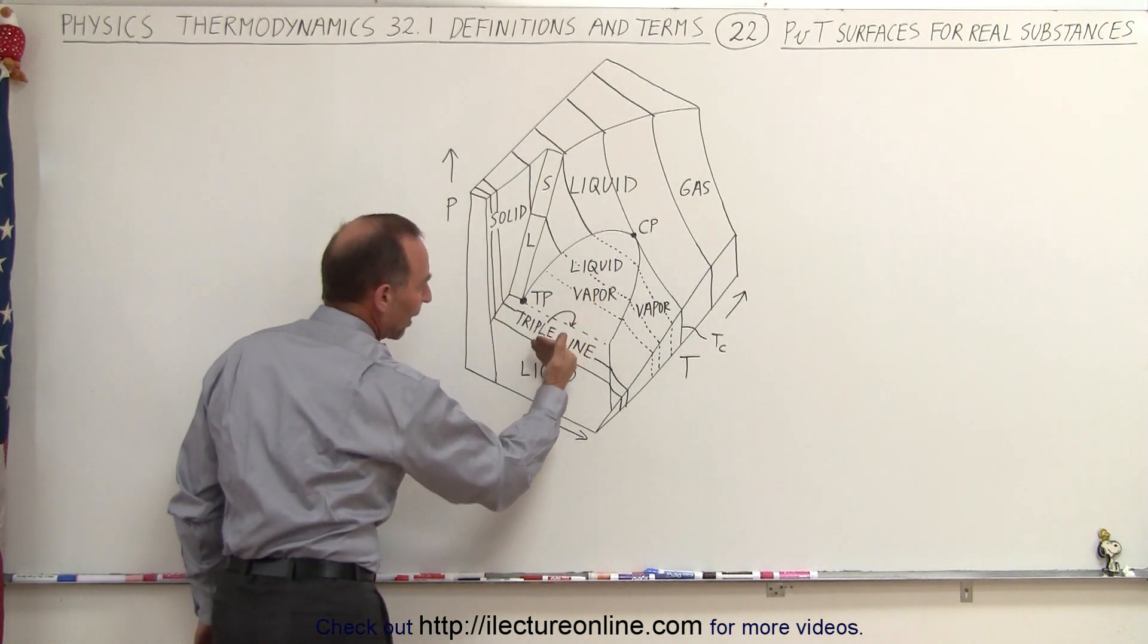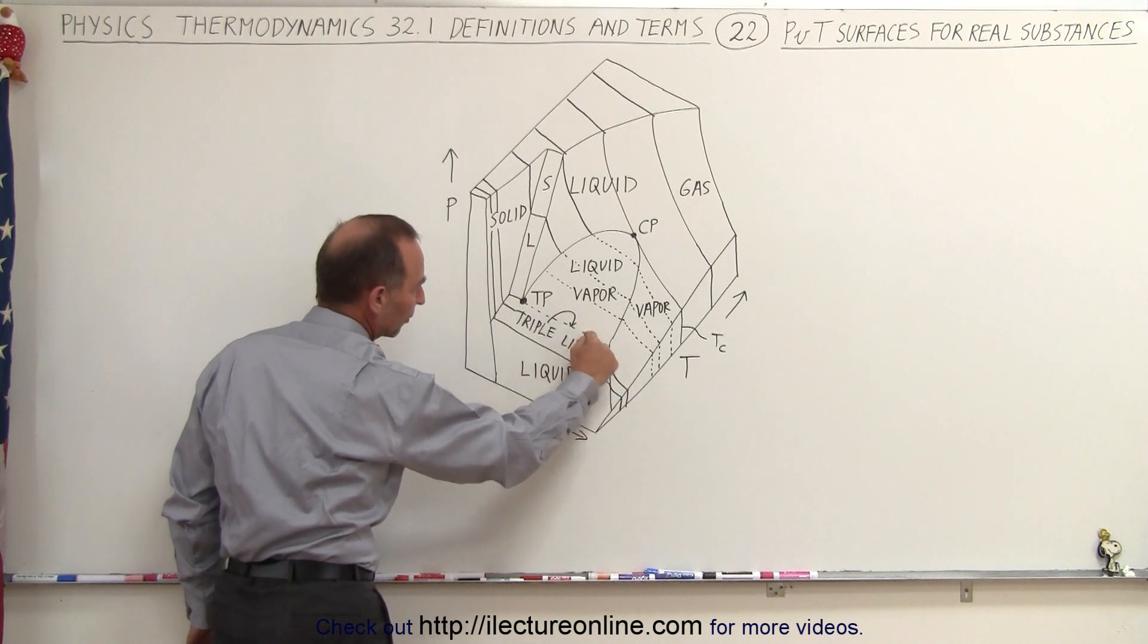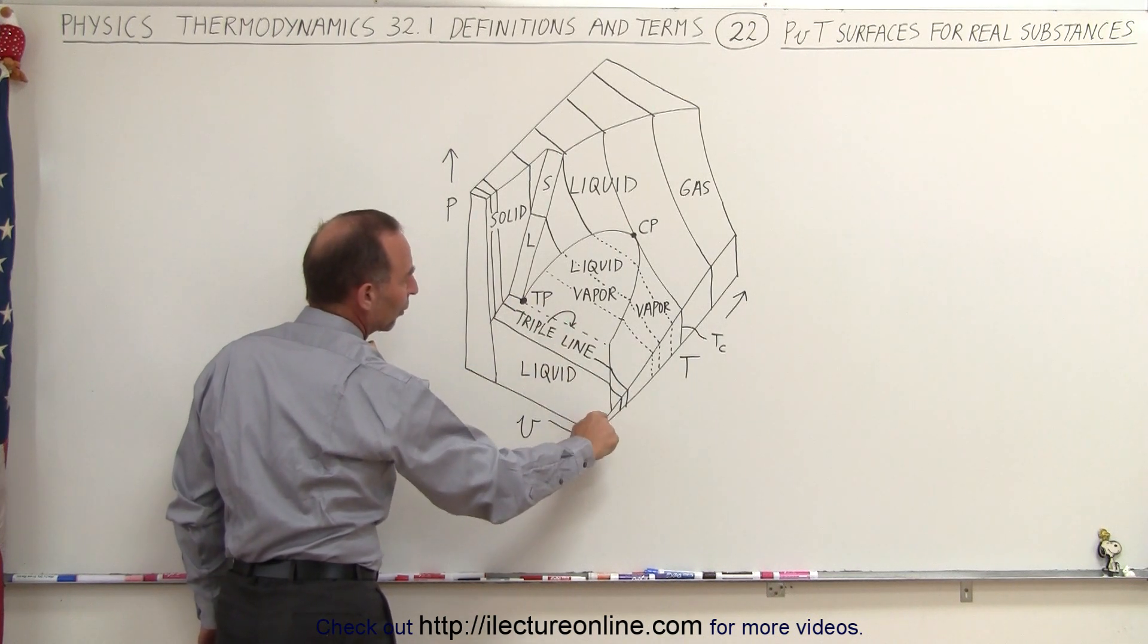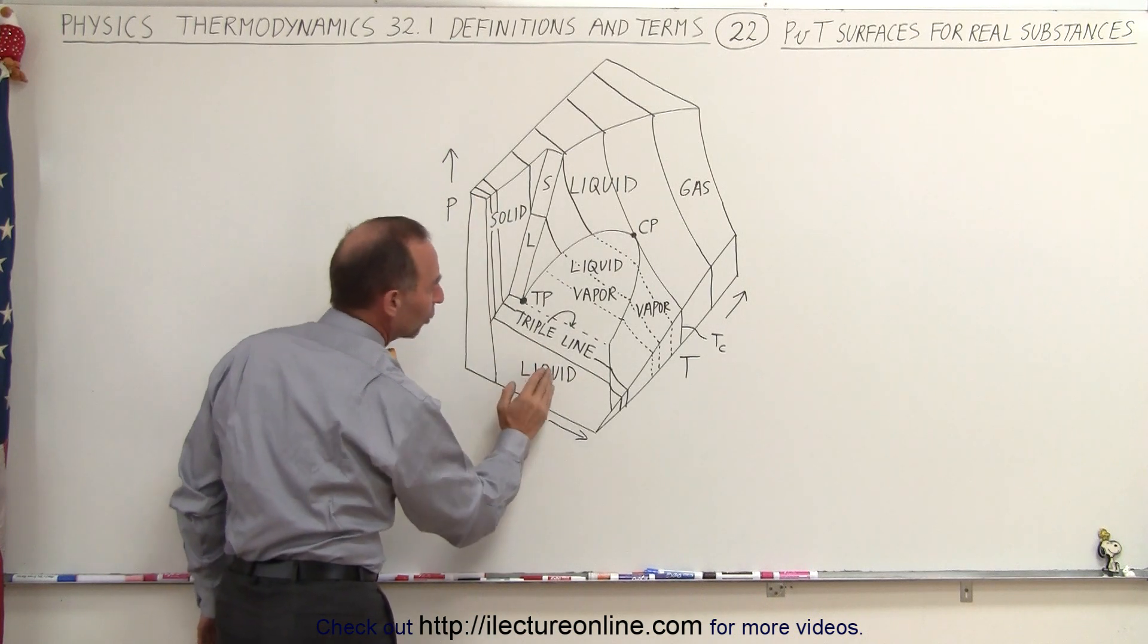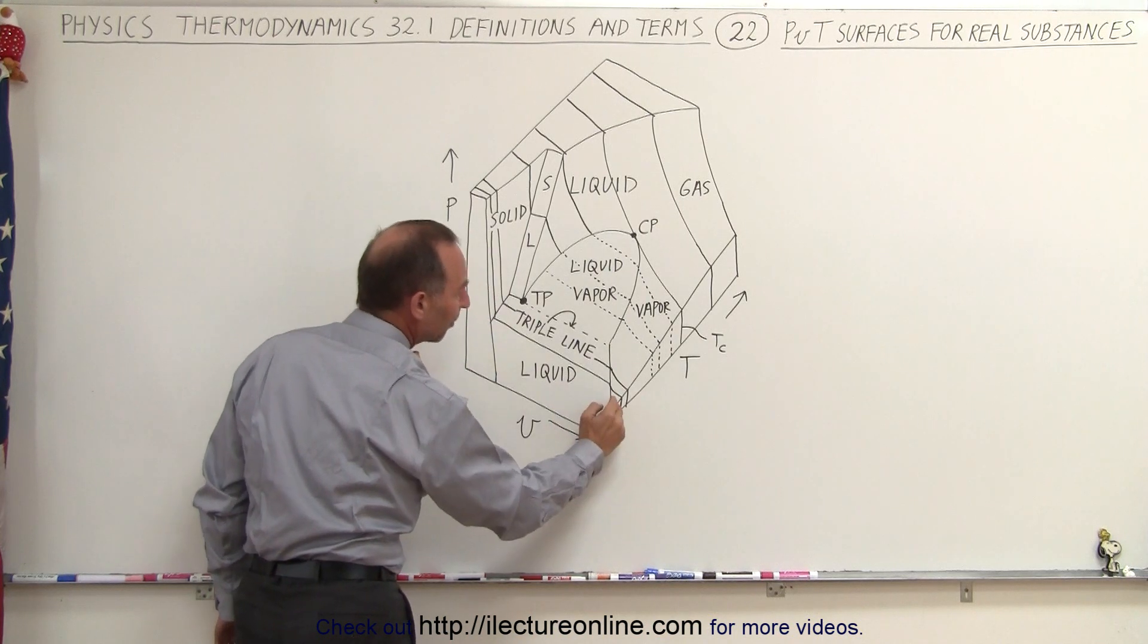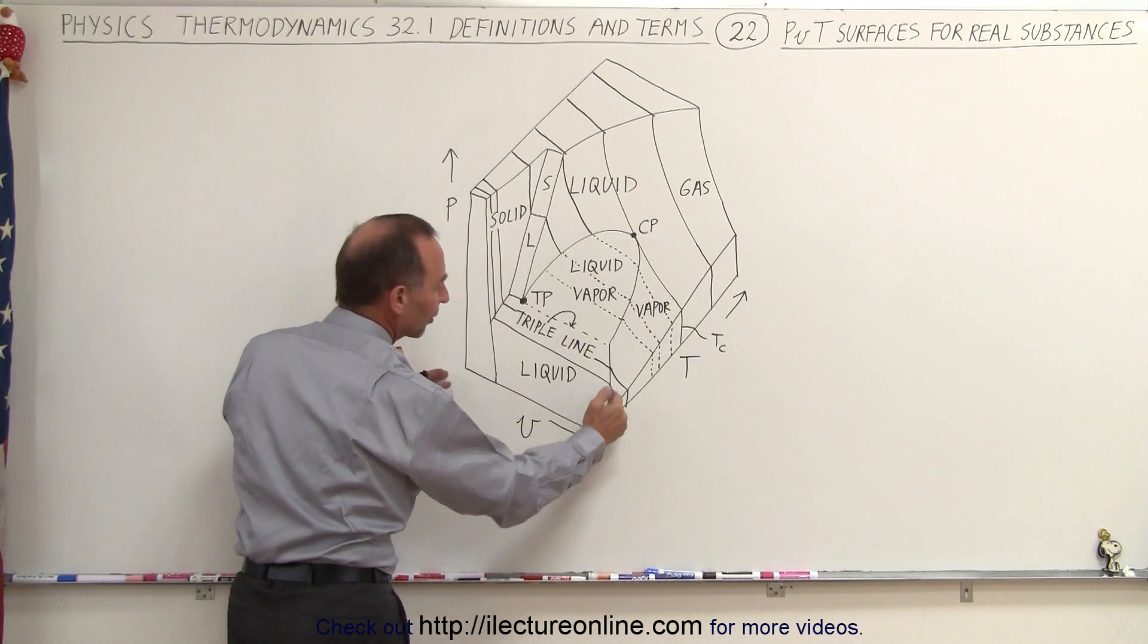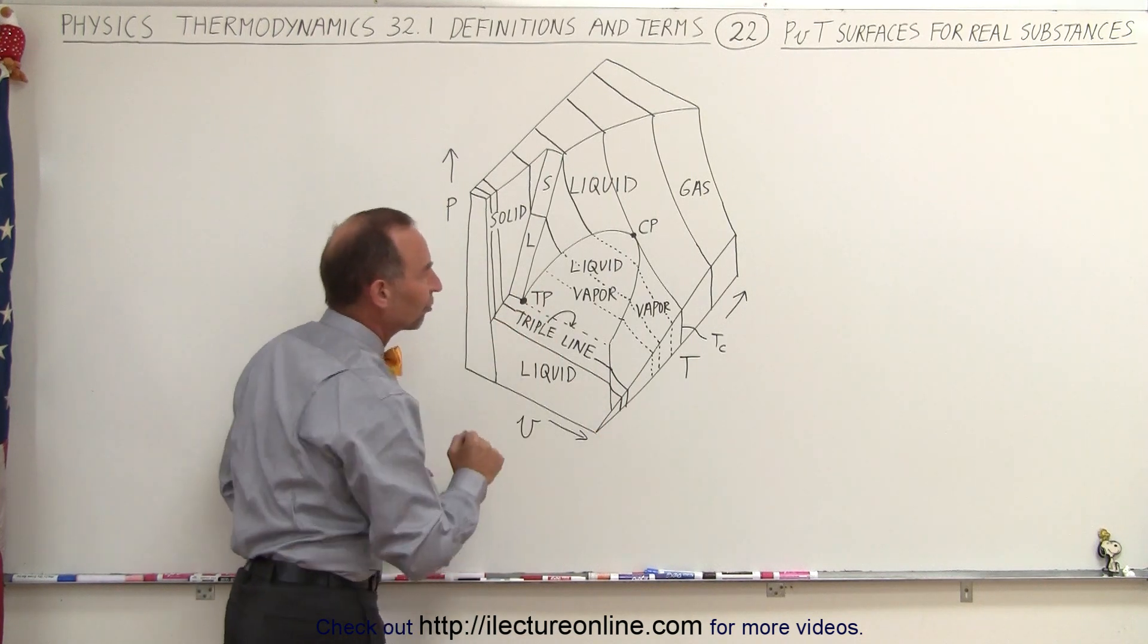Finally, when you come down to the bottom here, below the triple line—notice this is the triple line that goes to the triple point—we go from a liquid into a solid state. You can only get a gaseous state if you allow the volume to become extremely large, and at some point, regardless of the size of the volume, you can only have liquid and solid if the pressure is sufficiently high.